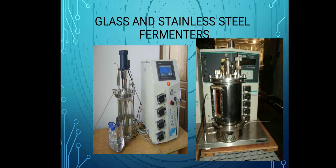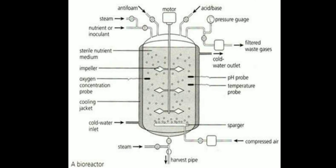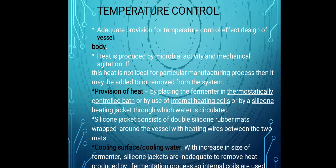This diagram shows a borosilicate glass and stainless steel fermenter — a large vessel containing anti-foam motors, acid-base ports, pressure gauge, gas filter, waste gas outlet, cold water outlet, pH probes, temperature probes, sparger, compressed air inlet, steam inlet, harvest pipe, cold water inlet, impeller, oxygen concentration probes, and a cooling jacket.